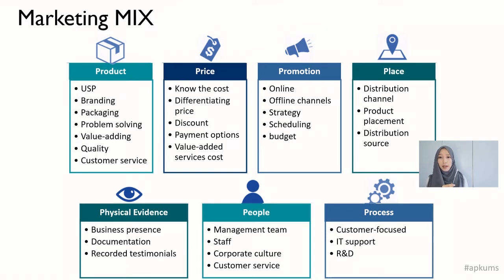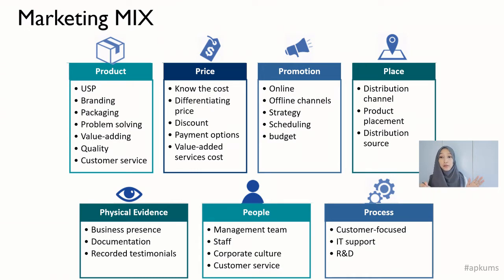The next one is place — where did I actually get this product? Did I get it from an online store or an offline store? You can think of the distribution channel: how did this product get delivered to your customers? Place is all about location, location, location — where do you open up your store. It's very important. Make sure people know your store exists. Place your store where there is highest traffic, where people come and pass by.